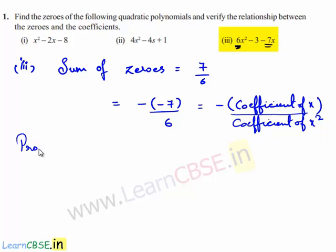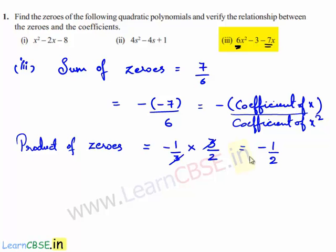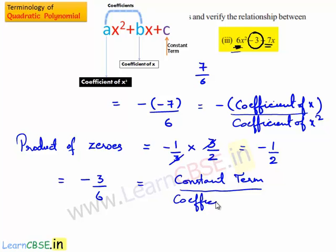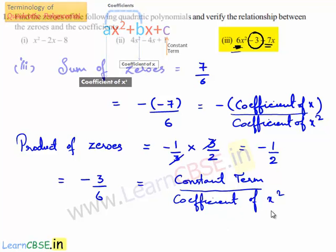Product of zeros = (minus 1/3) × (3/2). The 3s cancel, giving minus 1/2. This can be written as minus 3 divided by 6, where minus 3 is the constant term and 6 is the coefficient of x². Therefore, product of zeros equals constant term divided by the coefficient of x², verifying the relationship.